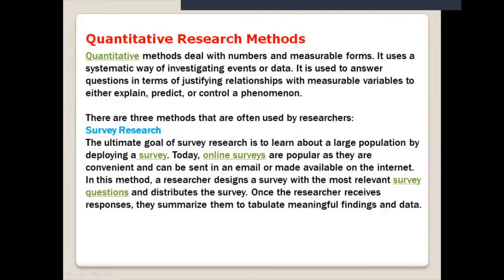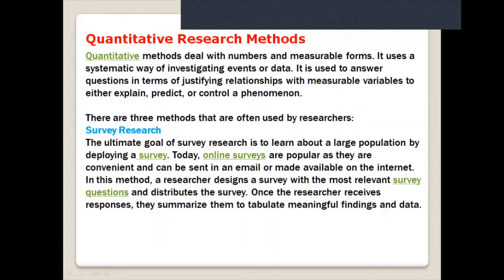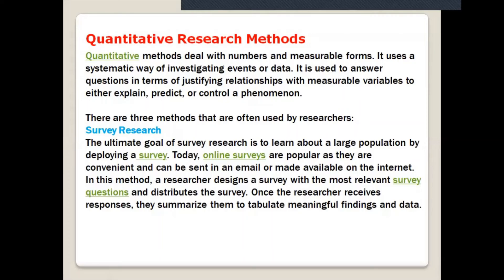There are three methods often used in quantitative research. First, survey research: the ultimate goal of survey research is to learn about large populations by deploying a survey. Today online surveys are popular as they are convenient and can be sent by email or made available on the internet. The researcher designs a survey with the most relevant questions, distributes it to different people or sections of society, and once responses are received, summarizes and tabulates findings and data.